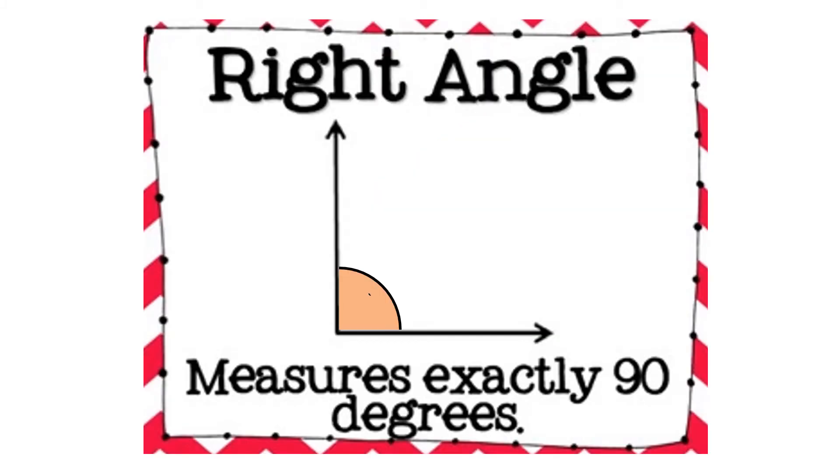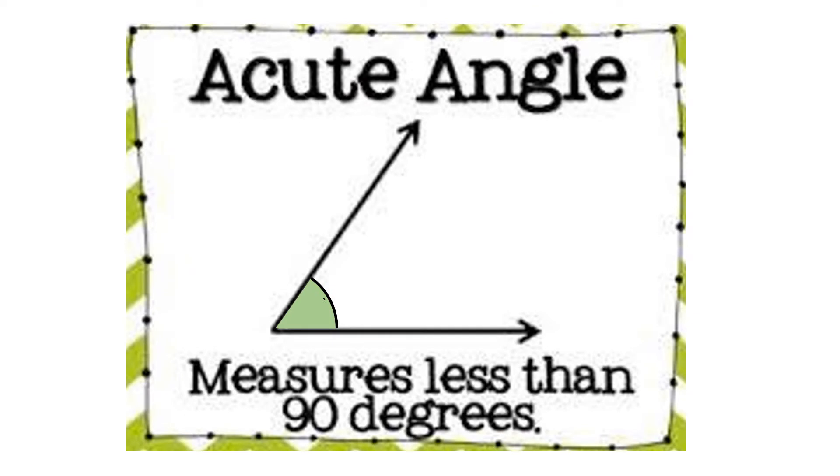This L-shaped angle is called a right angle and it measures exactly 90 degrees. This is an acute angle. Notice the amount of the opening or the amount of the turn in this angle. It is less than a right angle.